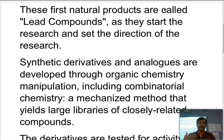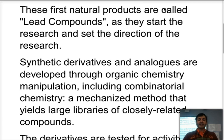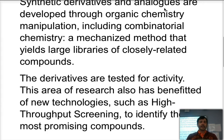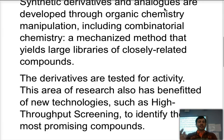We then make synthetic derivatives and analogs of these compounds through organic chemistry. Using combinatorial chemistry — a mechanized method — we can create very large libraries of closely related compounds. Those compounds can then be tested using high throughput screening, where we place a compound in an area with, for example, an antibody that will react if it binds properly, causing coagulation or a color change. That tells us the compound is promising and may have the desired activity, and from there we keep refining and changing the compound.